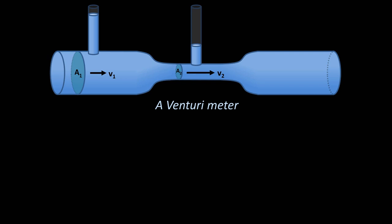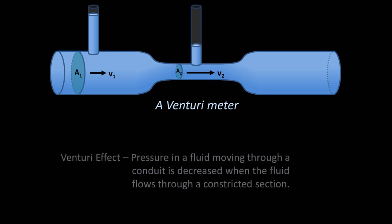You've probably already noticed something interesting. The height of the vertical columns of fluid are not equal. This might seem to be a violation of the principle discussed in the lesson on hydrostatics, that fluids always seek their own level, but that only strictly applies to stationary fluids. This is an example of the Venturi effect in which the pressure in a fluid moving through a conduit is decreased when the fluid flows through a constricted section. The term Venturi effect is also occasionally used more broadly for a variety of related phenomenon, particularly in medicine.